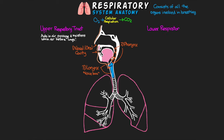Now let's talk about the lower respiratory tract, which is a bit more complex. This is sometimes referred to as the respiratory tree or the tracheobronchial tree, due to the branching structure of its different components. The average person actually has 23 different branches of the lower respiratory tract.